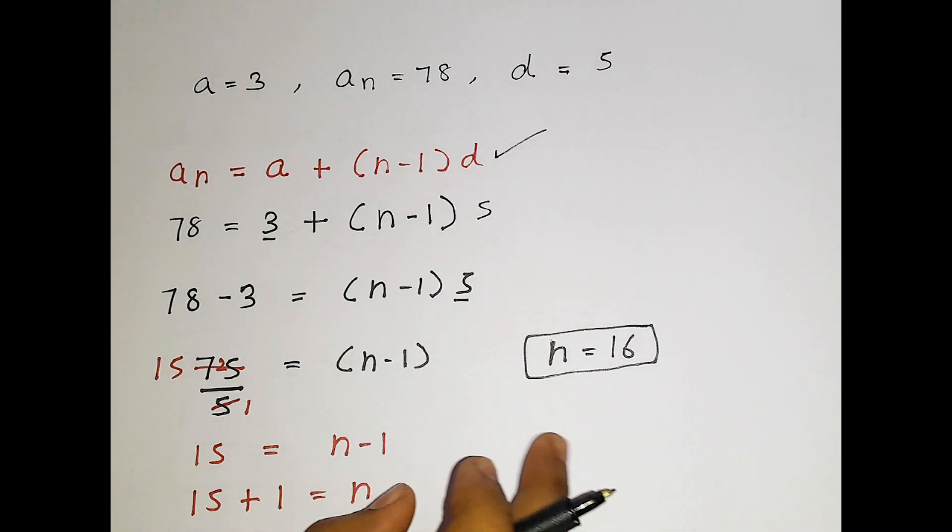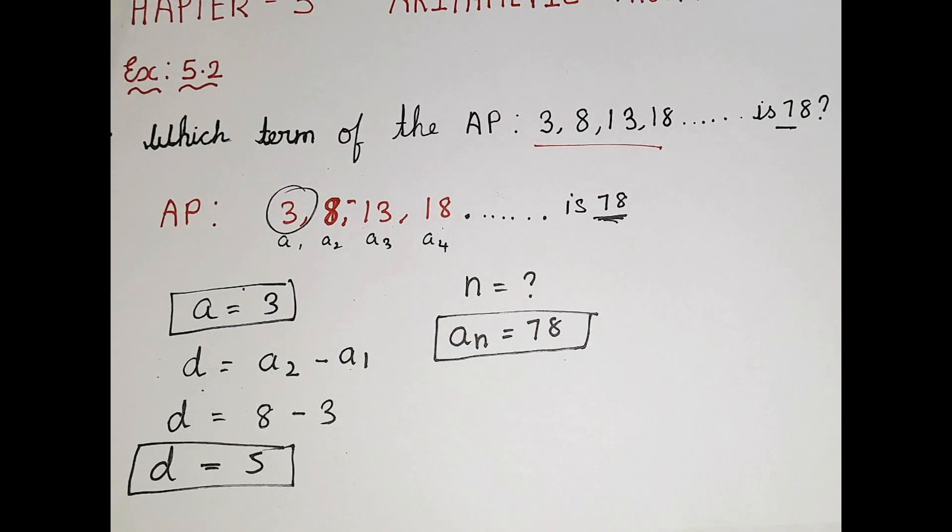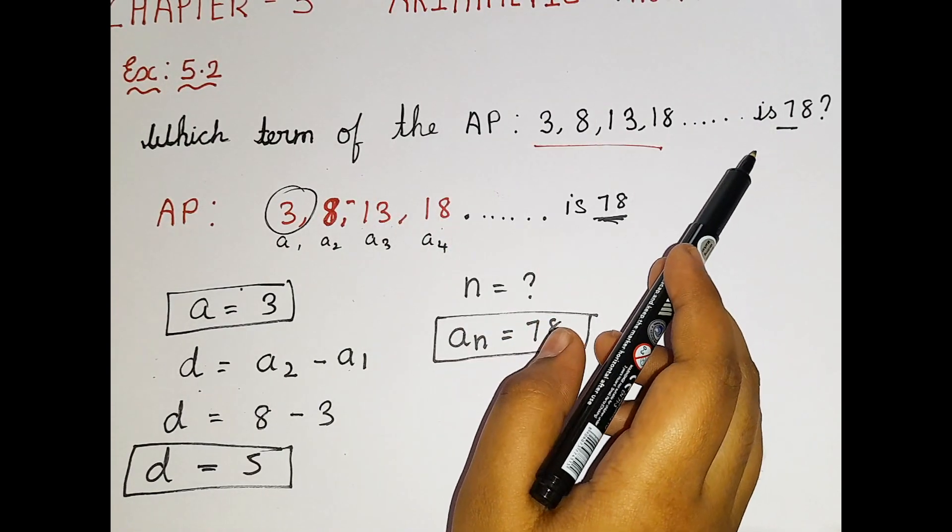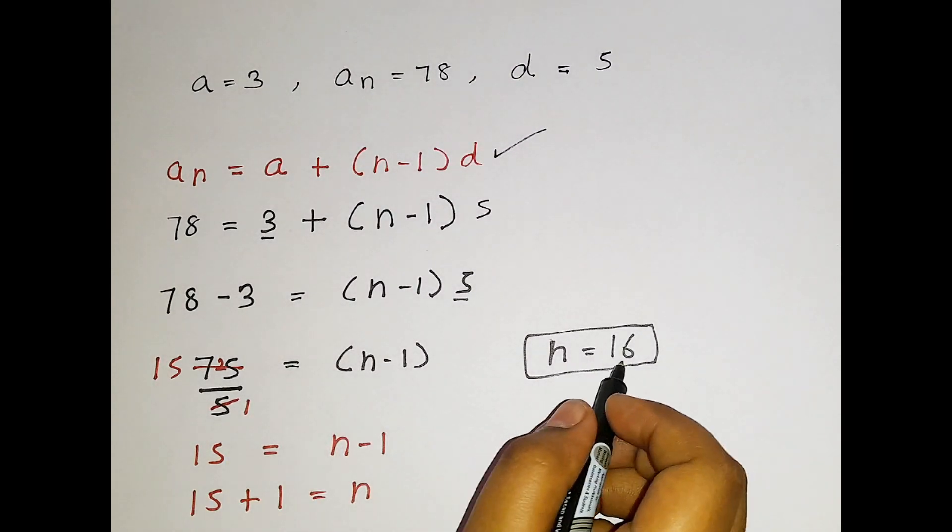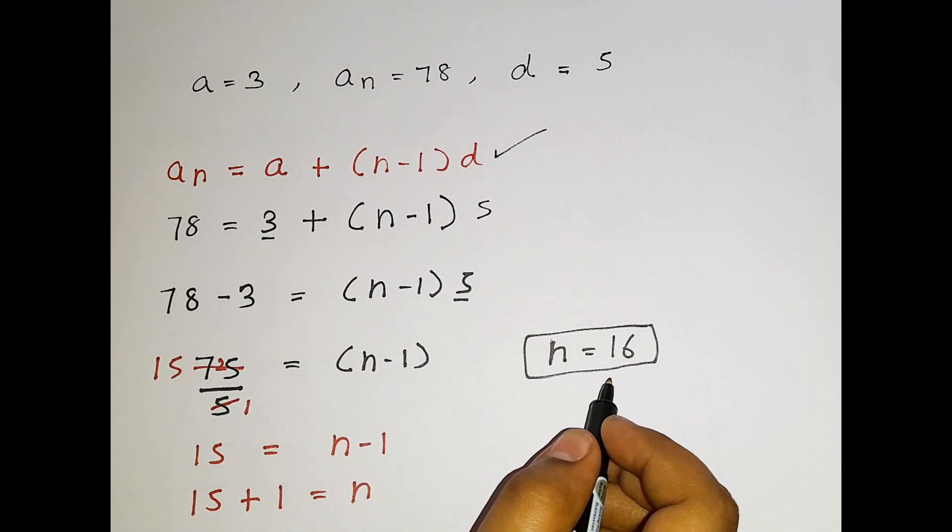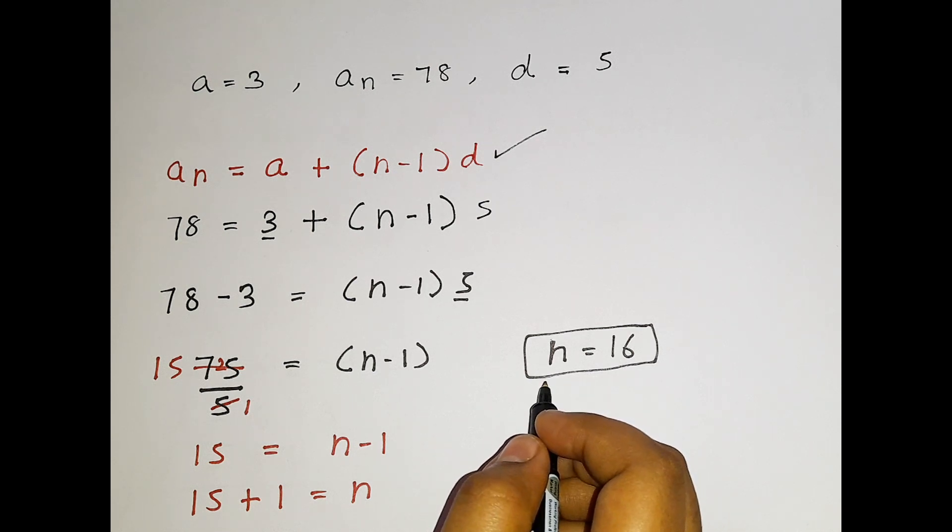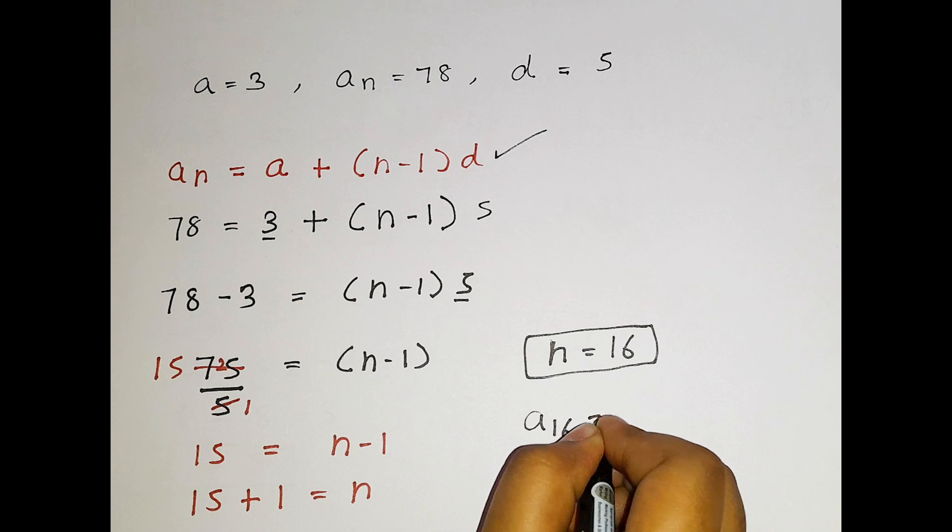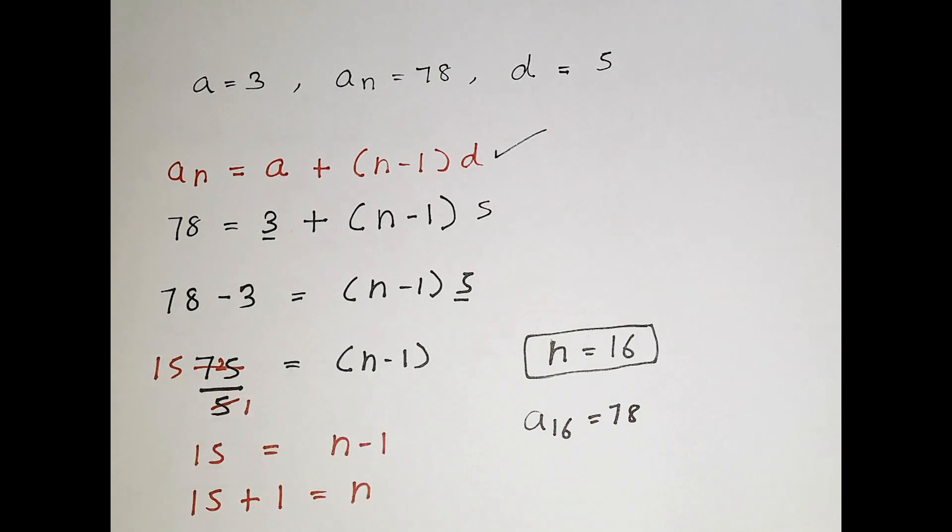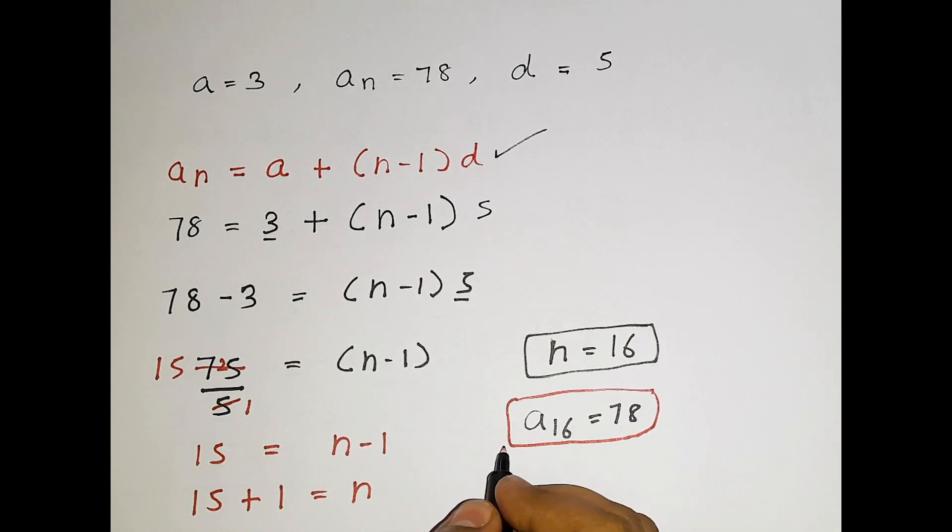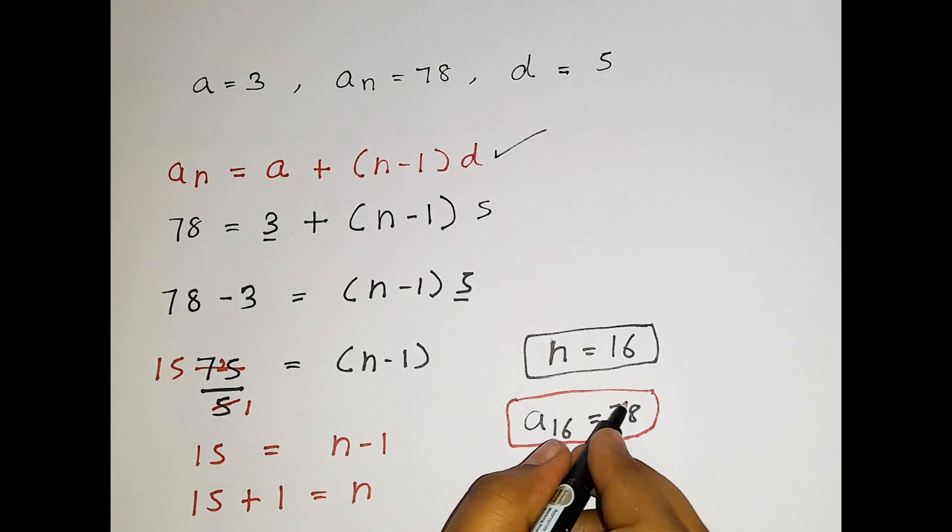Now what does this mean? What is the use of getting an n value? According to the question, they told that which term is 78, which term of the AP is 78. Since we got n is equal to 16, then we can say that the 16th term of AP is 78. Instead of writing in sentence, we can write A16 is equal to 78. This means that 16th term of AP is 78. I hope you guys understood this.